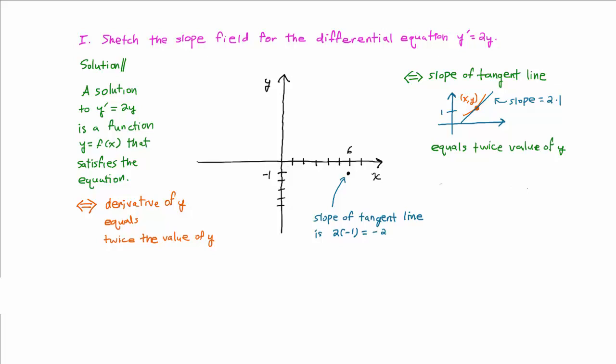With this information, we can draw the entire tangent line. Since negative 2 is negative 2 over 1, we go down 2 units and to the right 1 unit. That gives us 2 points and we just connect them to obtain the tangent line.